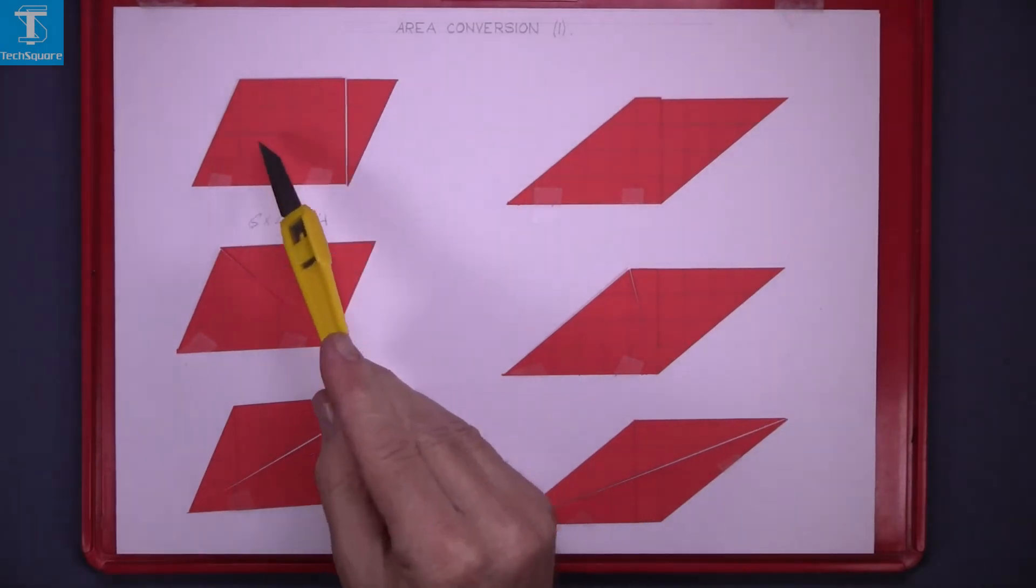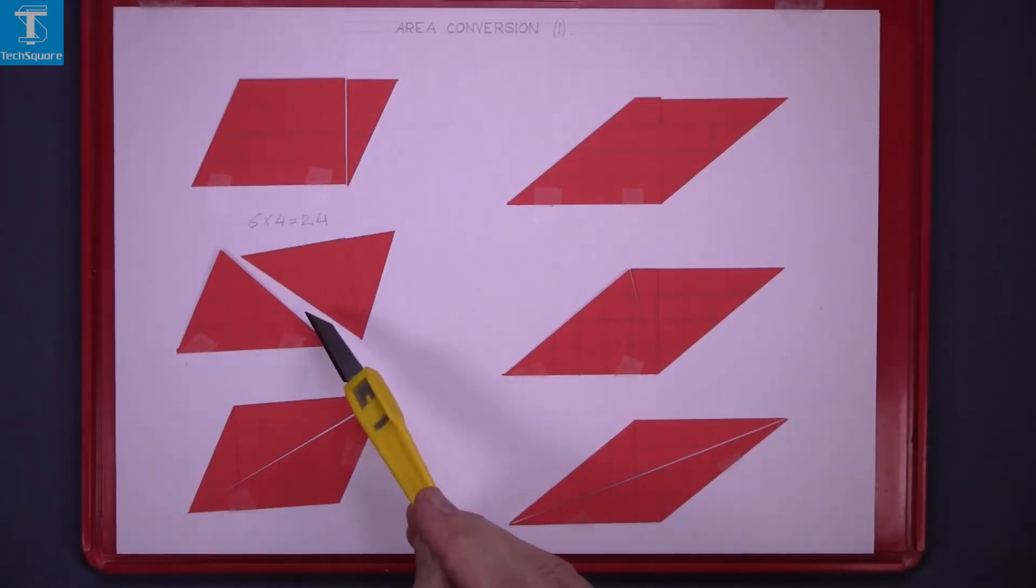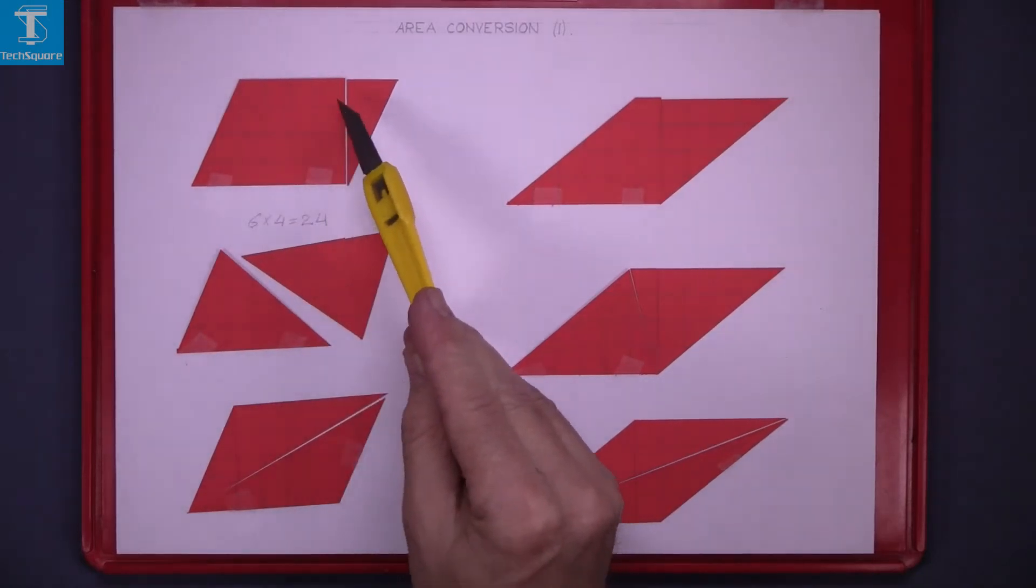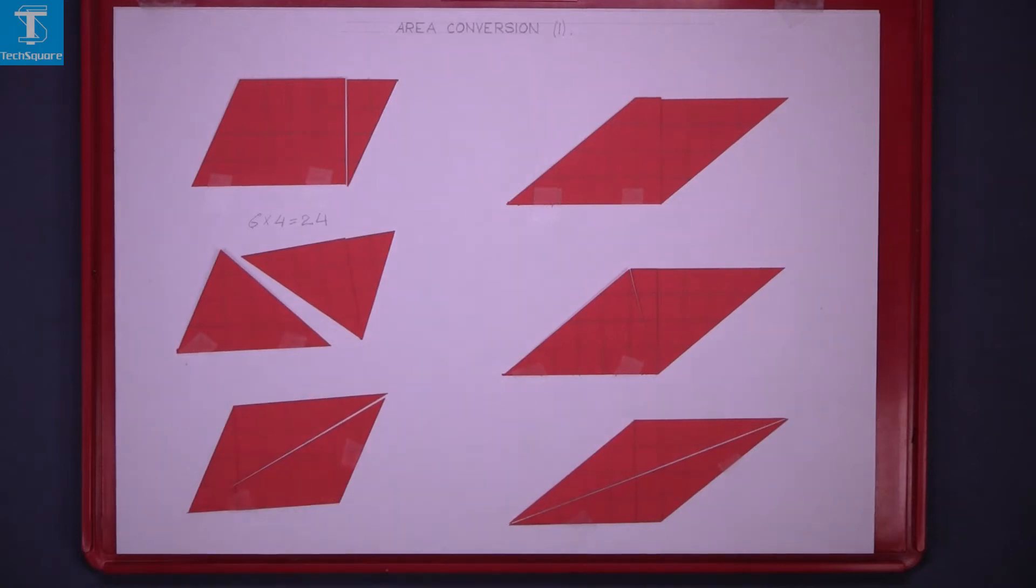I've taken this shape here and I've sliced it along the short diagonal. This triangle here is half the area of the quadrilateral above so the area of this triangle is 12. This one here I split along the long diagonal so the area of this triangle is 12.